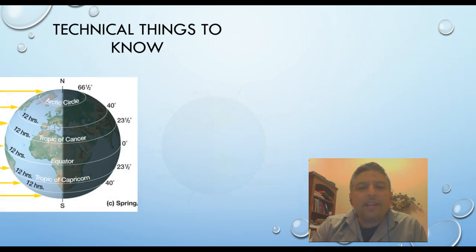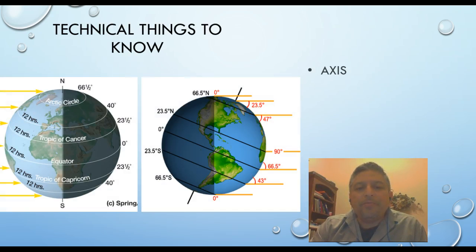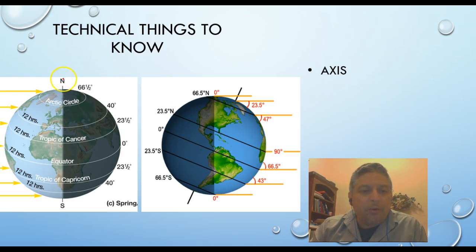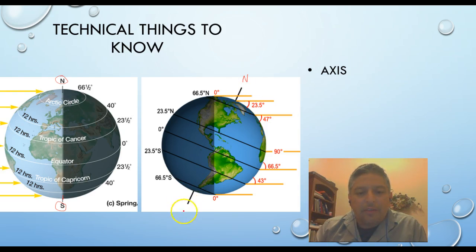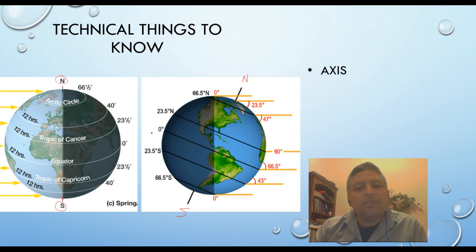There are a couple of technical things that we need to know before we proceed with the lesson. We need to know what the axis is. The axis is this section right here that is pointing at north and south, kind of like an imaginary line. Here we have north on this side and south on this side. Note that these two are a little bit different because one of them is a little bit tilted.